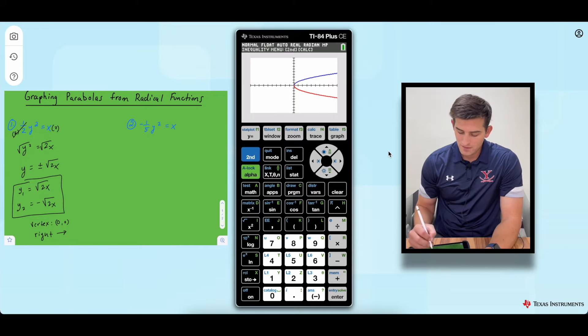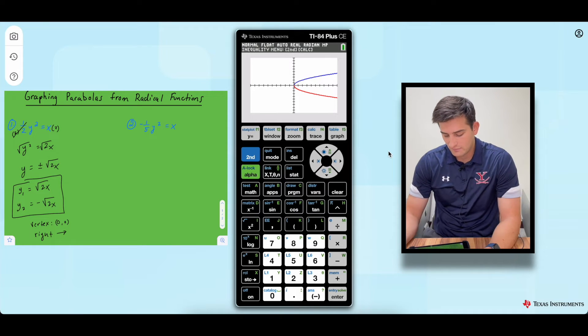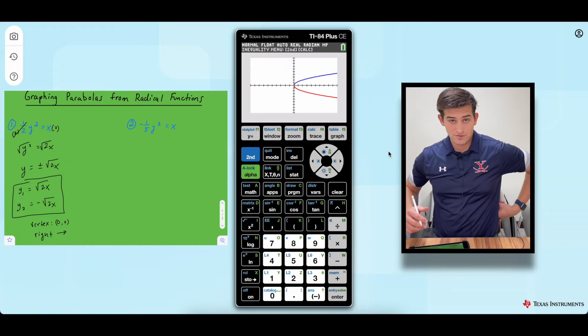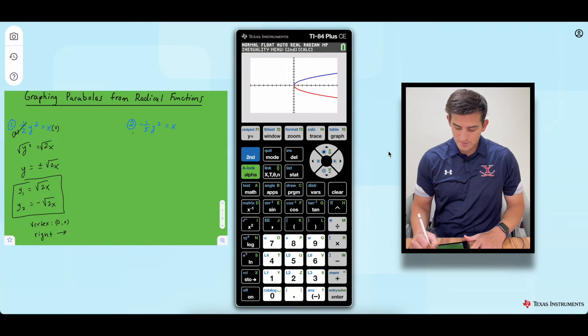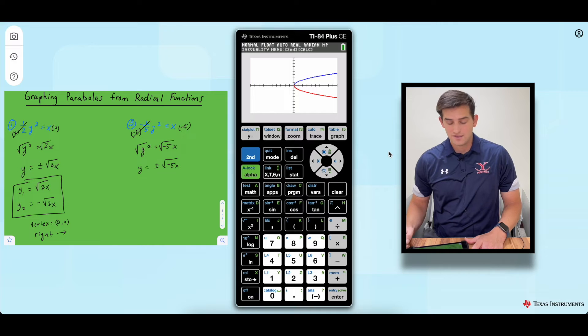Let's do another one. So same operations here, negative one fifth times y squared is equal to x. Let's multiply both sides by negative five to get rid of that fraction. So now we have y squared is equal to negative five x. Take the square root of both sides once again. So y is equal to positive and negative square root of negative five x.